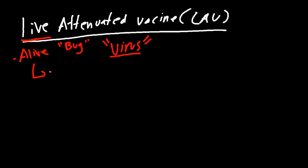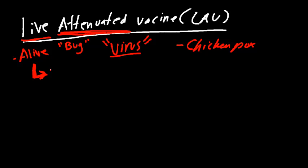Since it's still alive, why would we give an alive bug? Let's say chicken pox as our example — chicken pox is covered by live attenuated viruses. Why would we give a patient chicken pox? Well, we won't. Instead, we're going to give them the chicken pox virus, the varicella virus. However, what we're going to do is attenuate it — make it non-pathologic. We're going to remove the virulence factors, the pathogenic factors, so it's not going to cause disease.